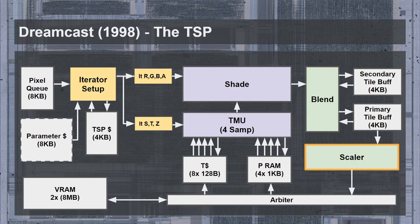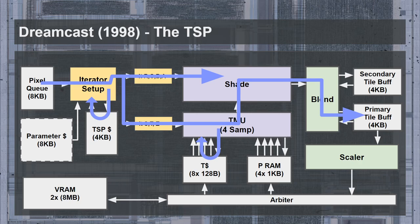Once rendering to the secondary buffer is completed, it can be merged back with the primary buffer to complete the drawing sequence. The primary tile buffer can output directly to a frame scaler, which can perform screen space supersampling or image upscaling to match the display output resolution. For clearing the tile buffer, it is likely that both buffers contain a valid bit per pixel that can be quickly cleared upon starting a new tile, with those bits checked during blending to select a clear color if marked invalid.